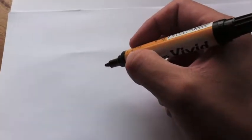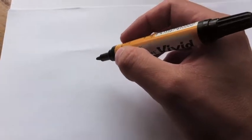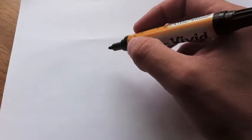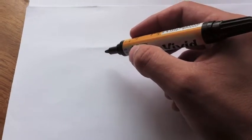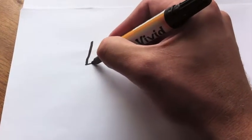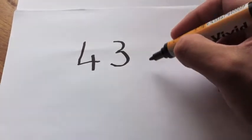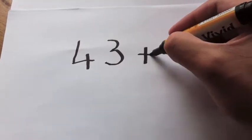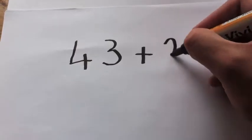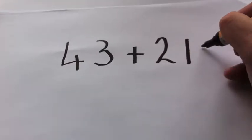OK guys, in this episode of Maths Made Easy NZ, we're going to look at adding two-digit numbers. The easiest way I've found for most people is to use what's called a place value method. So, let's say we had our question which was 43 plus 21 equals,